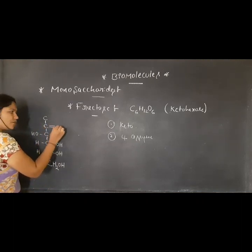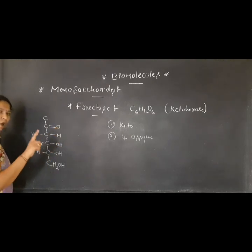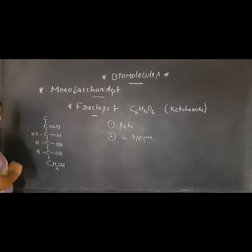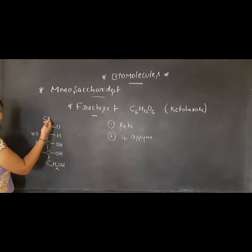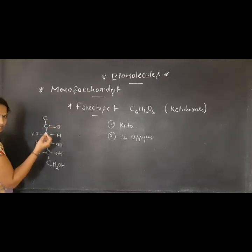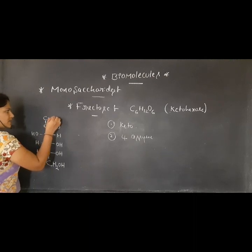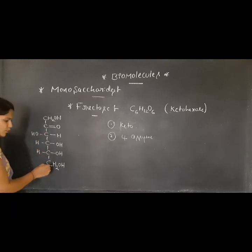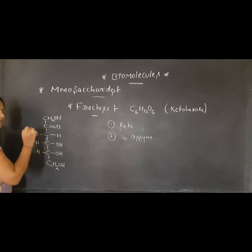In the second carbon, instead of OH we have to write the ketonic group. Since ketones are always present in the middle of the chain, and after elucidation we conclude that the ketone position will be at carbon number two. So in fructose, you have two primary alcohols, three secondary alcohols, and one ketonic group.